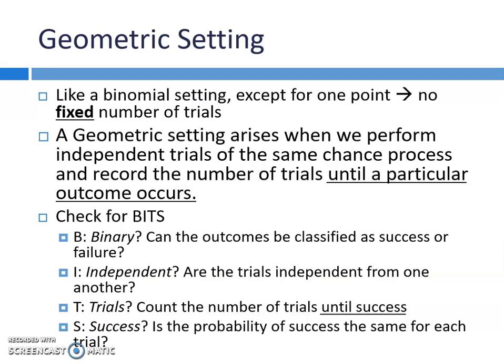There's a different acronym for geometric — it was BINS for binomial, but for geometric it's going to be BITS, B-I-T-S. Binary is still the same: is it success or failure? I is still the same: are they independent? T now represents: are we counting the number of trials until success happens? And S — success — stays the same: is the probability of success the same for each trial? So T is the different one here.